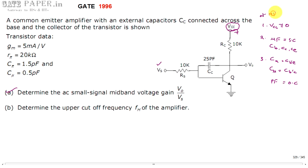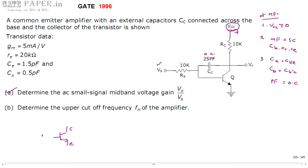These are the three things to consider for mid frequencies in any circuit. Also, the 25 pF external capacitor — even though it is not an internal capacitor — also acts as open circuit because it is in the picofarad range. Now, drawing the equivalent circuit: the transistor symbol has emitter, collector, and base sides. The 25 pF capacitor is open circuit, meaning it is simply disconnected.